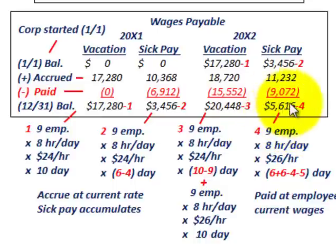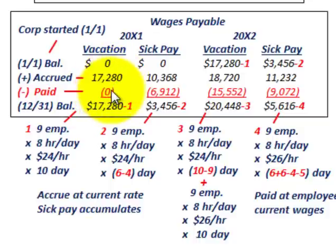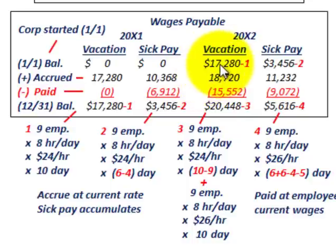So to summarize the arithmetic: set up the chart, begin with your beginning balance, determine the accrued amount, subtract out what was paid at the appropriate labor rates, and you get your ending balance — which becomes the beginning balance of the next year. That takes care of the arithmetic; now let's look at the journal entries.